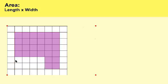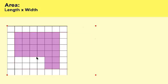Now how would you find the area of this shape? Here's the trick. You still multiply length by width, but what you have to do is you have to do the multiplication of length by width twice. Let me show you how.